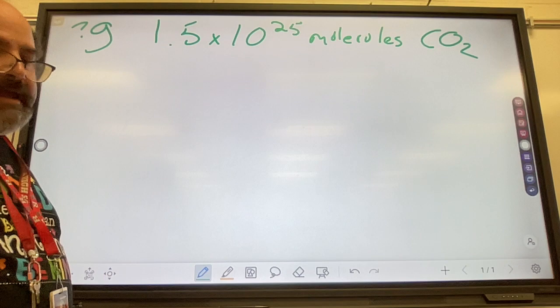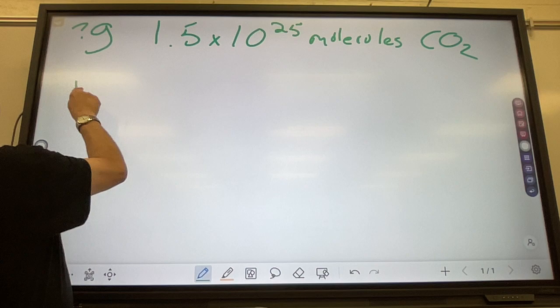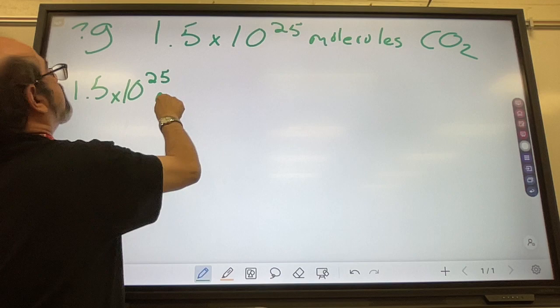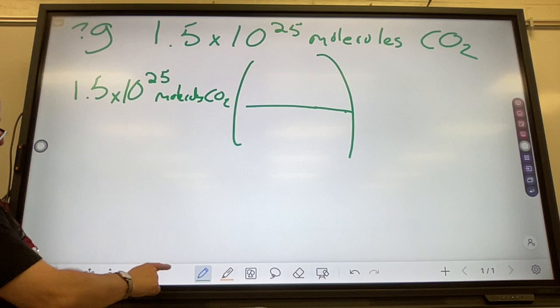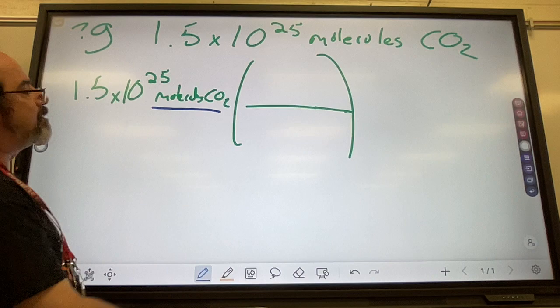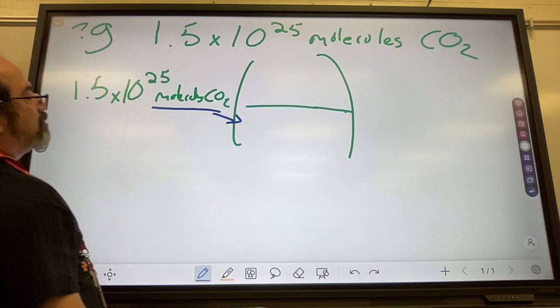So, whenever you have a conversion problem, first you start with what you have, and you want to figure out where you're going to. This is your starting point: 1.5 times 10 to the 25 molecules of CO2, and then you're going to have a conversion factor. Whatever is here, units, goes on the bottom so they can cancel. That's molecules of CO2.